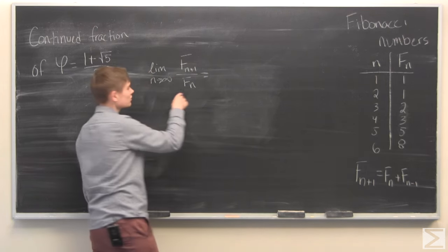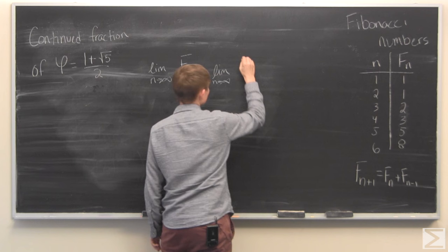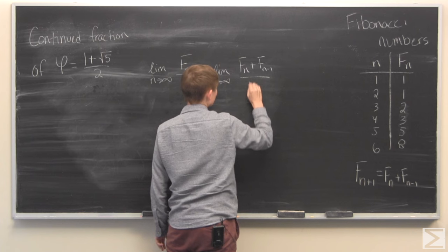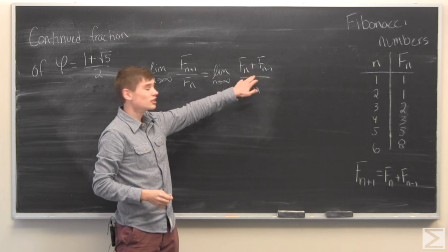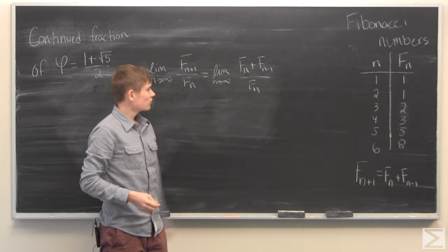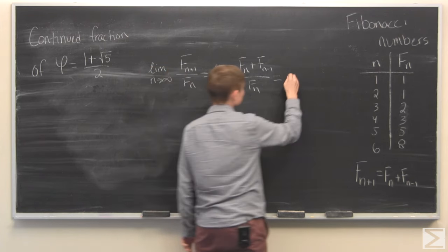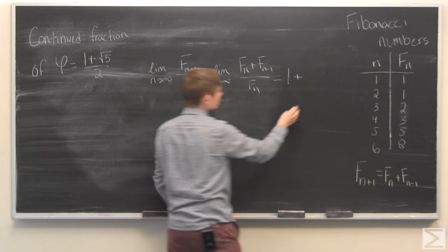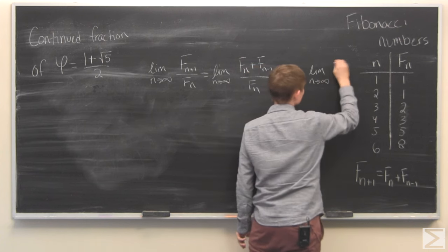This limit is equal to the limit as n approaches infinity of the sum of the nth Fibonacci number and the n-1 Fibonacci number over the nth Fibonacci number. We can simplify this a little bit. Separate it into two fractions.